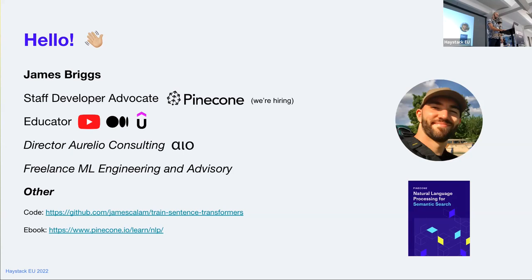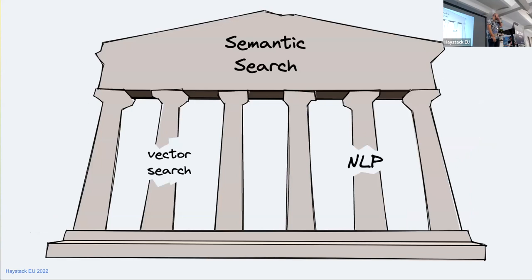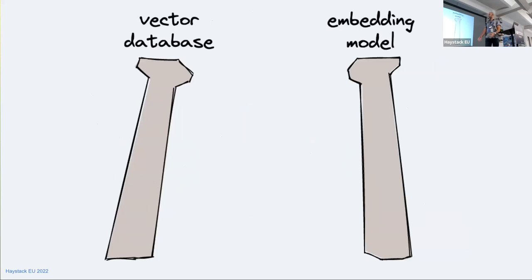Semantic search, for me, is held up by two different disciplines: NLP and vector search. Within those two disciplines, you have two main components that go together. Within vector search, you have a vector database, and within NLP, you have these embedding models.